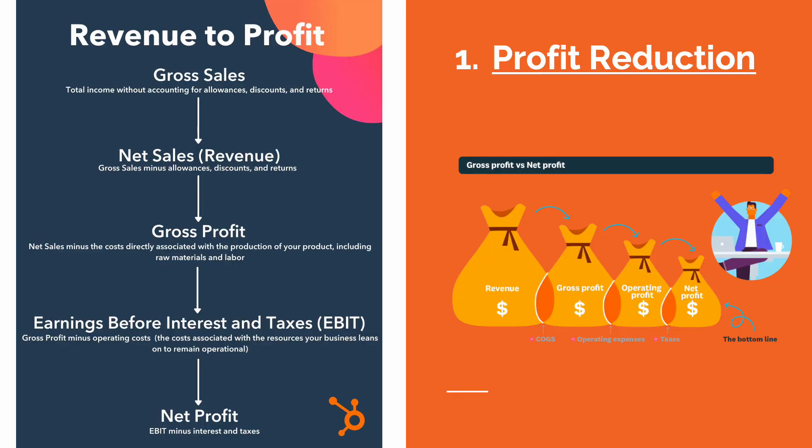The first example of tax avoidance I want to discuss stems from the Starbucks video that we watched this week. In quick summary, the speaker explained how larger corporations can reduce annual profits through intercompany interest charges, royalty agreement fees, or claiming past losses.